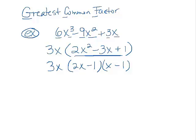And if you just do a quick check here, 2x times x is 2x squared. 2x times negative 1 is negative 2x. Negative 1 times x is negative 1x. So that makes a total of negative 3x. And negative 1 times negative 1 is positive 1. So we were able to factor into actually 3 expressions here.